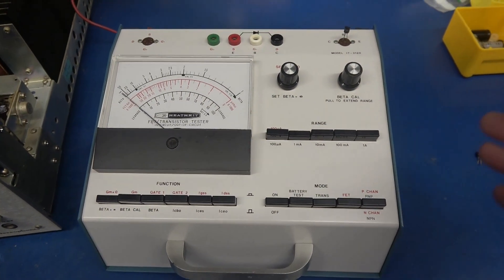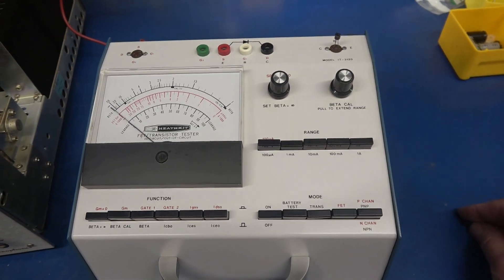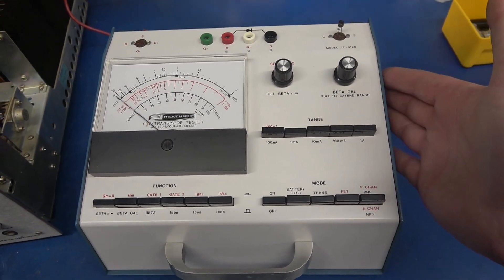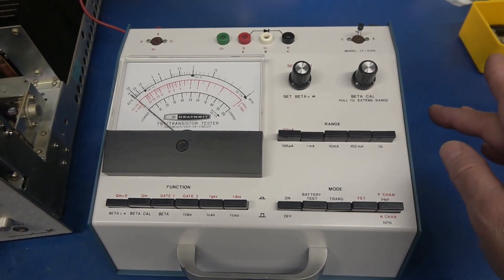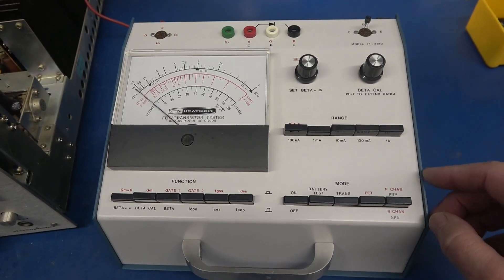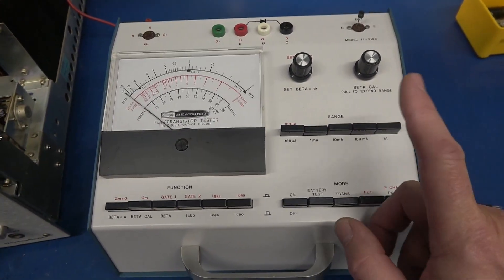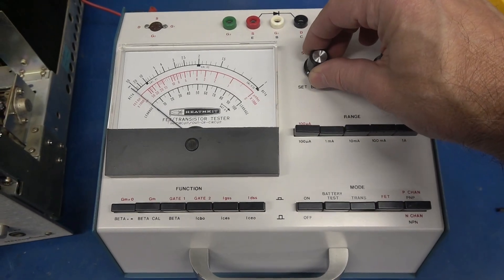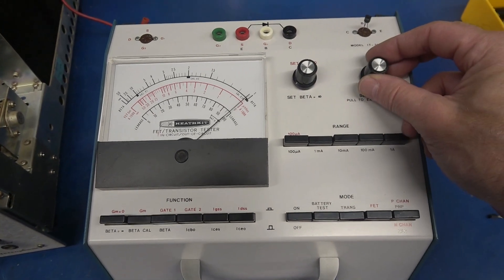For the fun of it, let's test that transistor I pulled from the Marantz. I have my Heathkit IT3120. I actually built this when I was 15 years old. Every year, I used to get a Heathkit under the tree, and I knew what that box was. I have a good transistor installed, so you can see how it should look. You go to beta and zero the meter. Then you go to cal and go full scale.